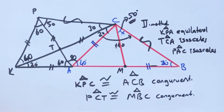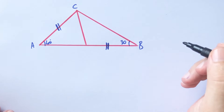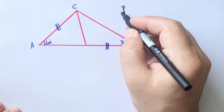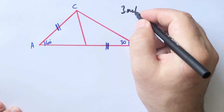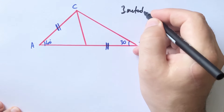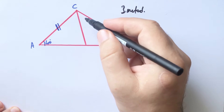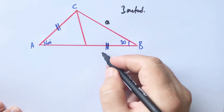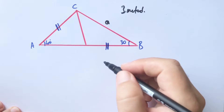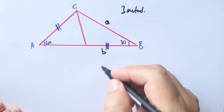Therefore, according to Side-Angle-Side, X equals 50 degrees. Now let's apply the third method. In the third method we will apply the sine rule. Let's call this side A and this side B.